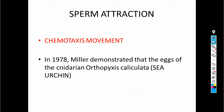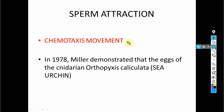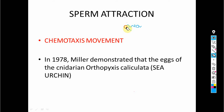Welcome to my channel. My topic is sperm attraction, which is basically based on chemotaxis movement. For example, the egg of a sea urchin will release a chemical, and when it releases that chemical it will attract the sperm. The egg releases the chemical, and that chemical attracts the sperm towards the egg. This kind of movement is known as chemotaxis movement.